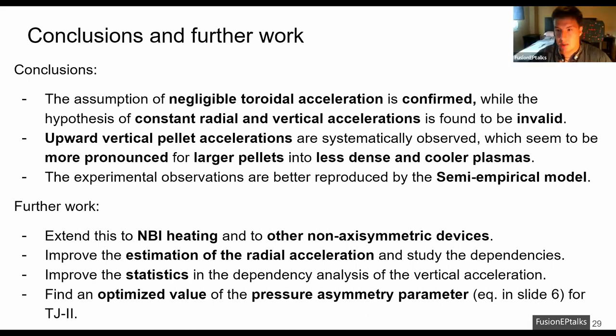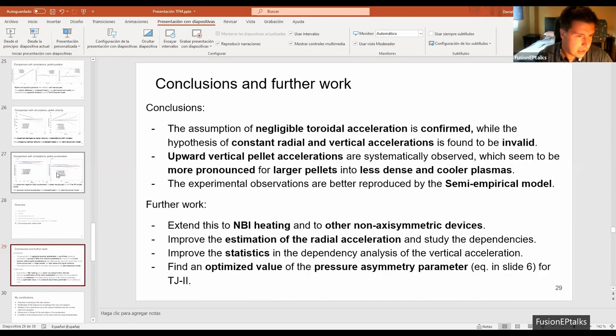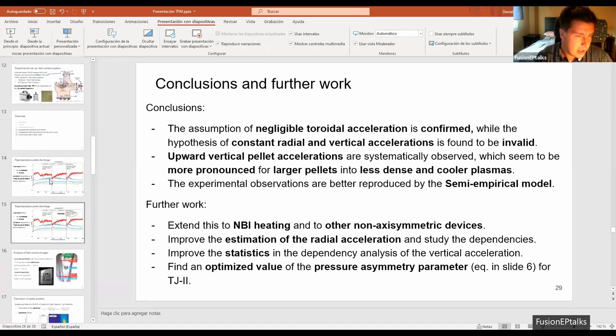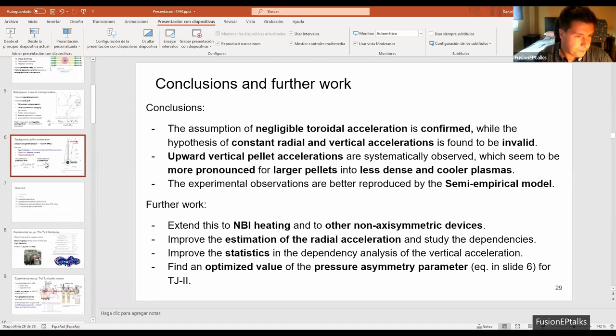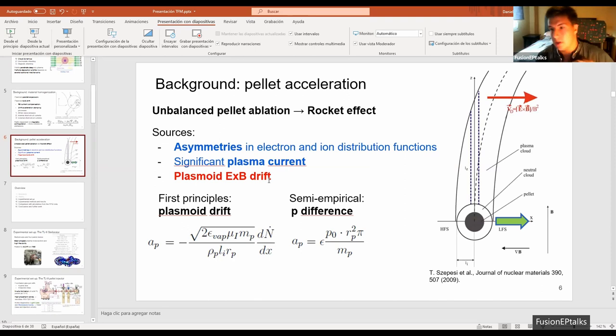Yes, this is a very critical question and it really goes to the point where this research is, I mean the current state of this research. And as I mentioned in this slide, the plasmoid cross-B drift is believed to be a cause of this pellet acceleration. And it's exactly the source that is introducing this model that is not very accurate.